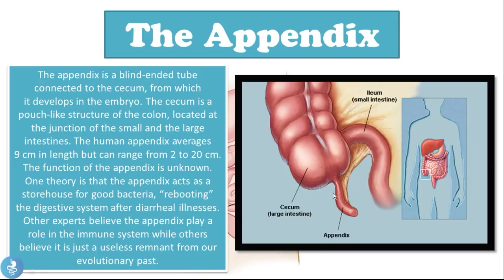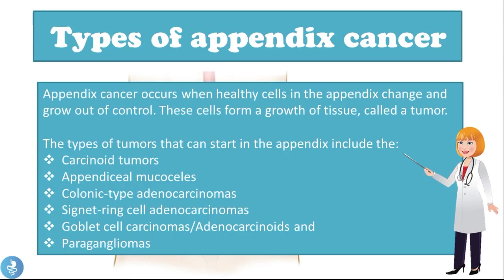Looking at the image on the right, we have the cecum, which is the pouch-like structure, and then we have this blind-ended tube which is the appendix attached to the cecum. This is what the appendix looks like, and today we're going to be discussing some cancers that occur at this point in the GI tract. Appendix cancer occurs when healthy cells in the appendix change and grow out of control, forming a growth of tissue called a tumor.